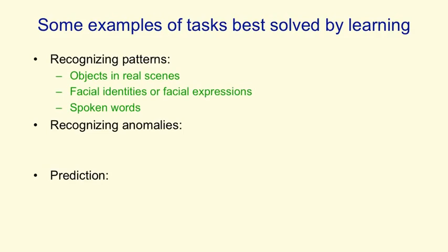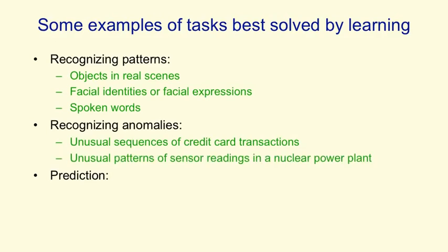There's also recognising anomalies. An unusual sequence of credit card transactions would be an anomaly. Another example would be an unusual pattern of sensor readings in a nuclear power plant. You wouldn't really want to deal with those by supervised learning where you look at the ones that blow up. You'd really like to recognise that something funny is happening without any supervision signal — it's just not behaving in its normal way.